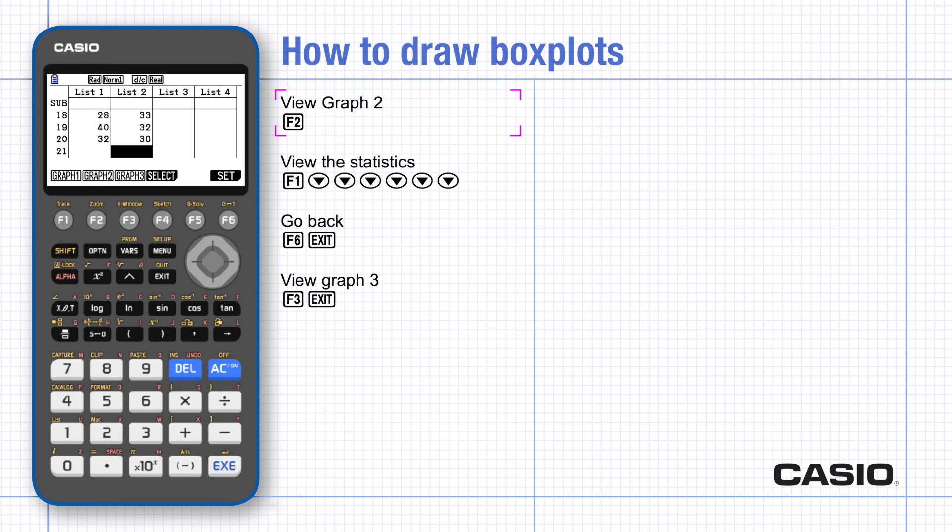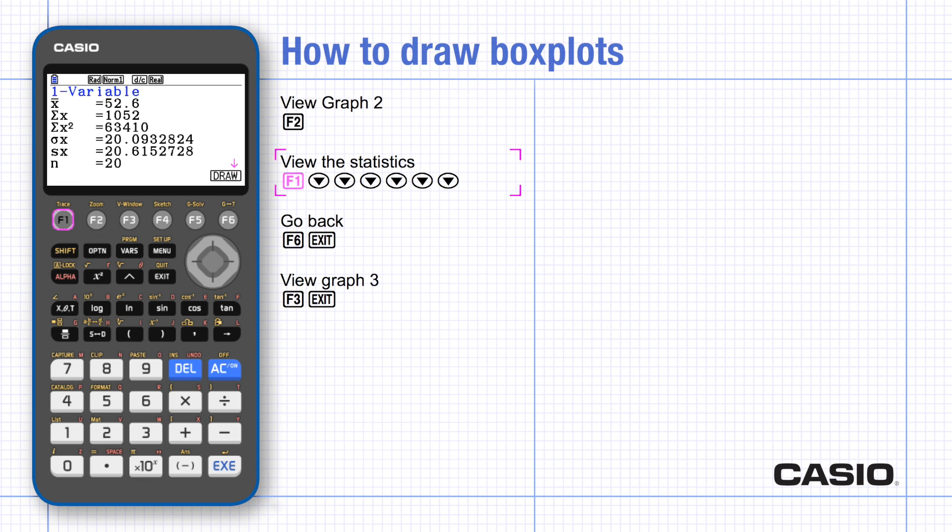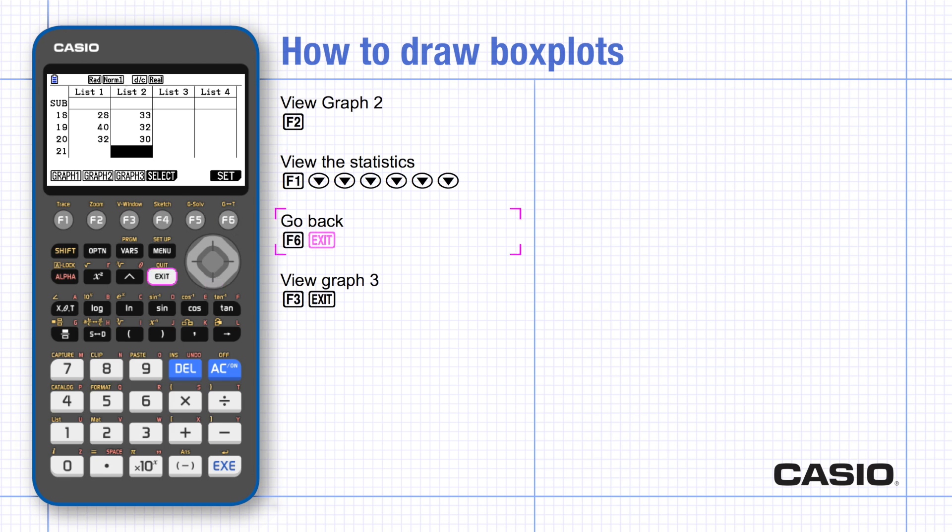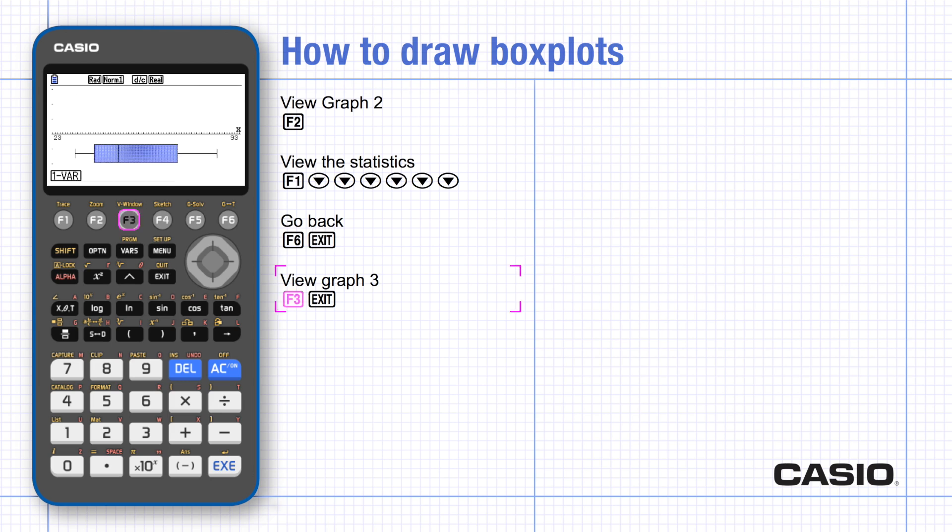To see each box plot in turn, press graph two to see the first box plot. Choose one var to see the statistics for this data set and scroll down to see the median and the quartiles. Press draw to return to the graph, and then exit to return to the menu. F3 shows you graph three in exactly the same way.